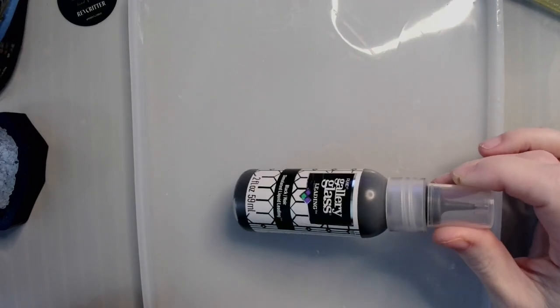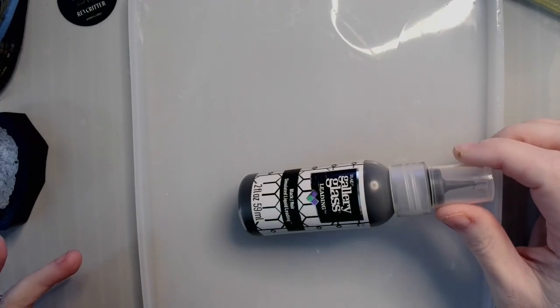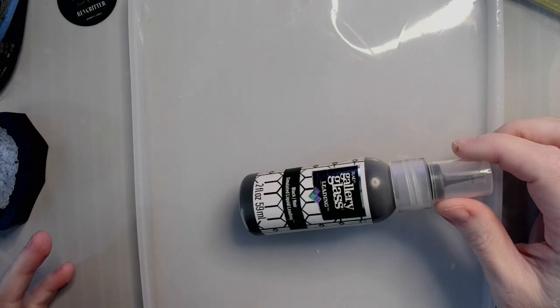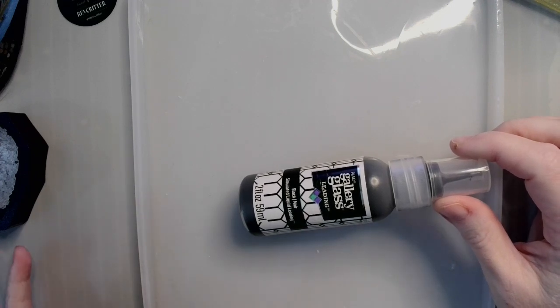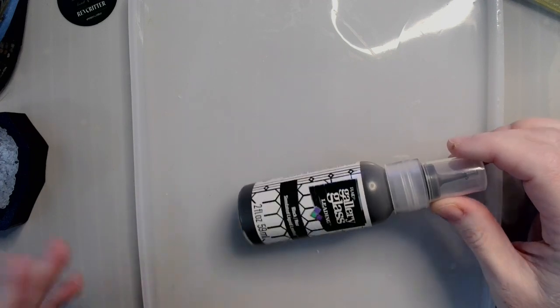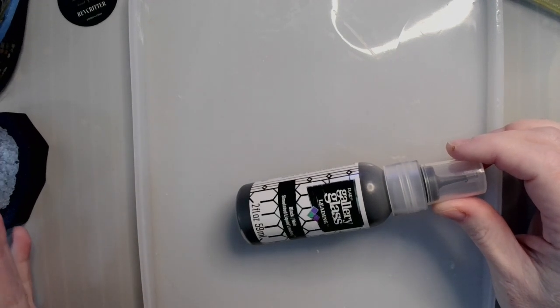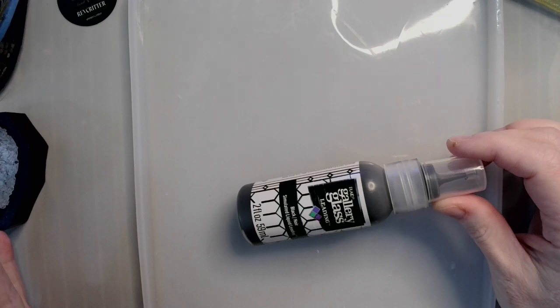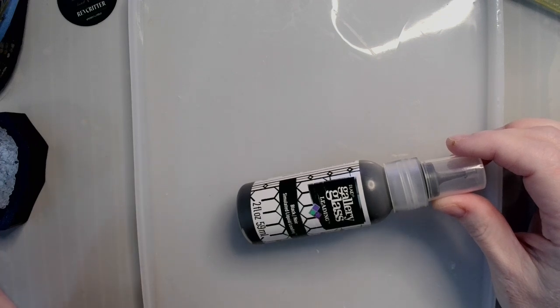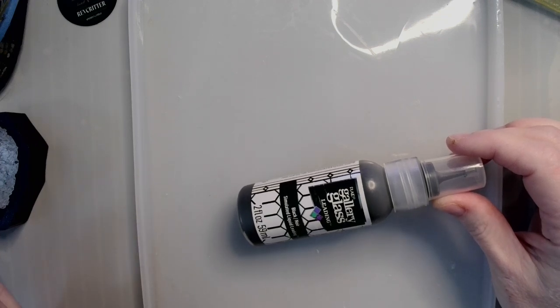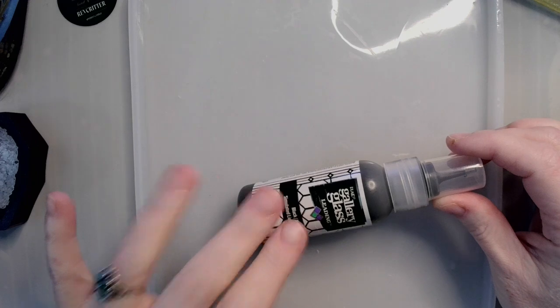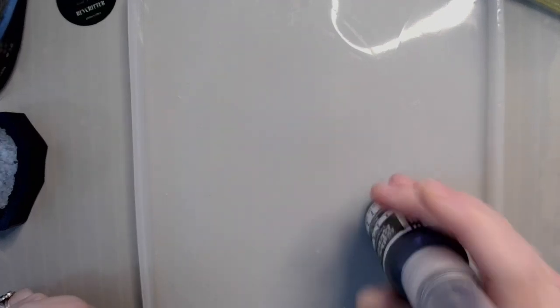What I'm gonna start with is making, because Dusty's basically he looks like a dust bunny. So he's very fuzzy, very fluffy, and he's got lots of little fluffy bits off of him. I don't want to use UV resin because I can't make a silicone mold out of UV resin and have it work properly. So I'm gonna try using my black gallery glass to make some of the little fluffy, fuzzy bits for Dusty.